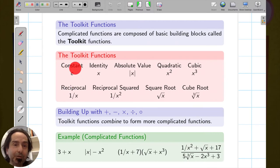We have constants, functions that always give you the same output. The identity, the output is the same as the input. Absolute value, it gives you the same number but makes it positive or zero. The squaring function, the cubing function, the inverting function, inverting squared, taking the square root, and taking the cube root.